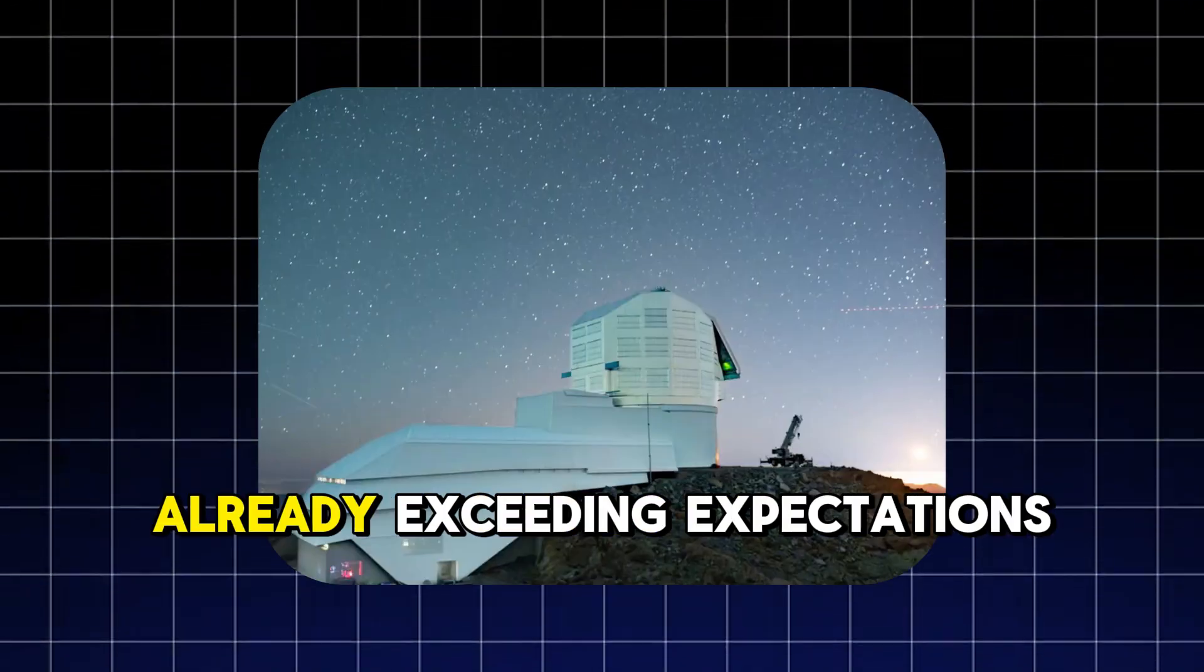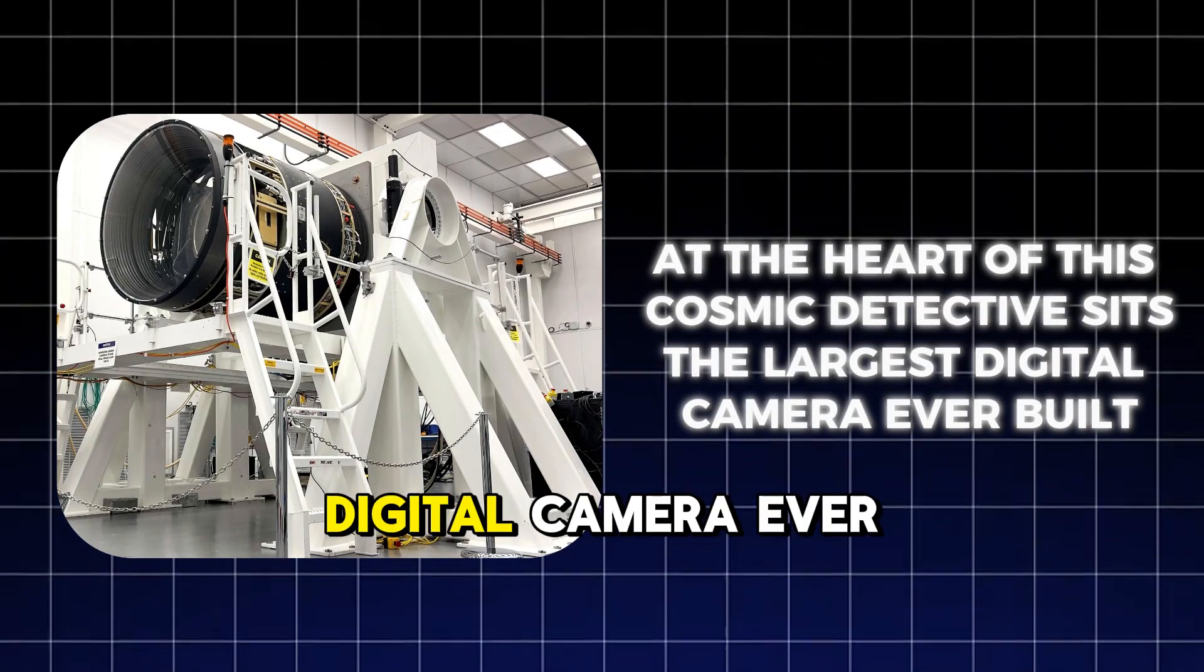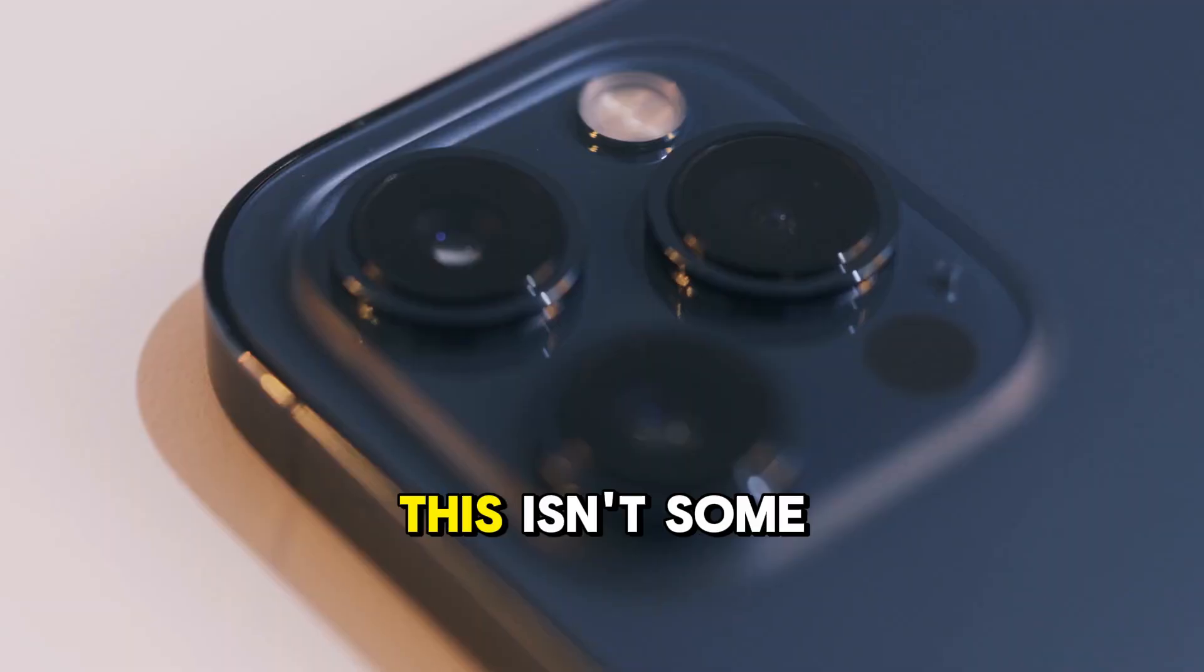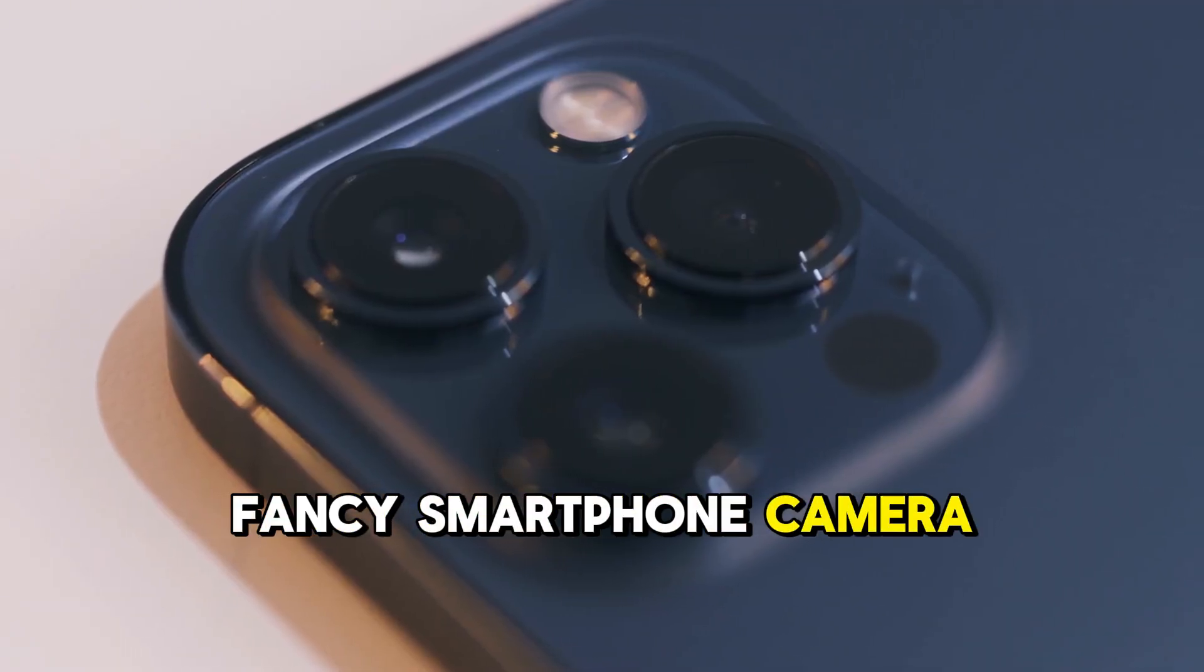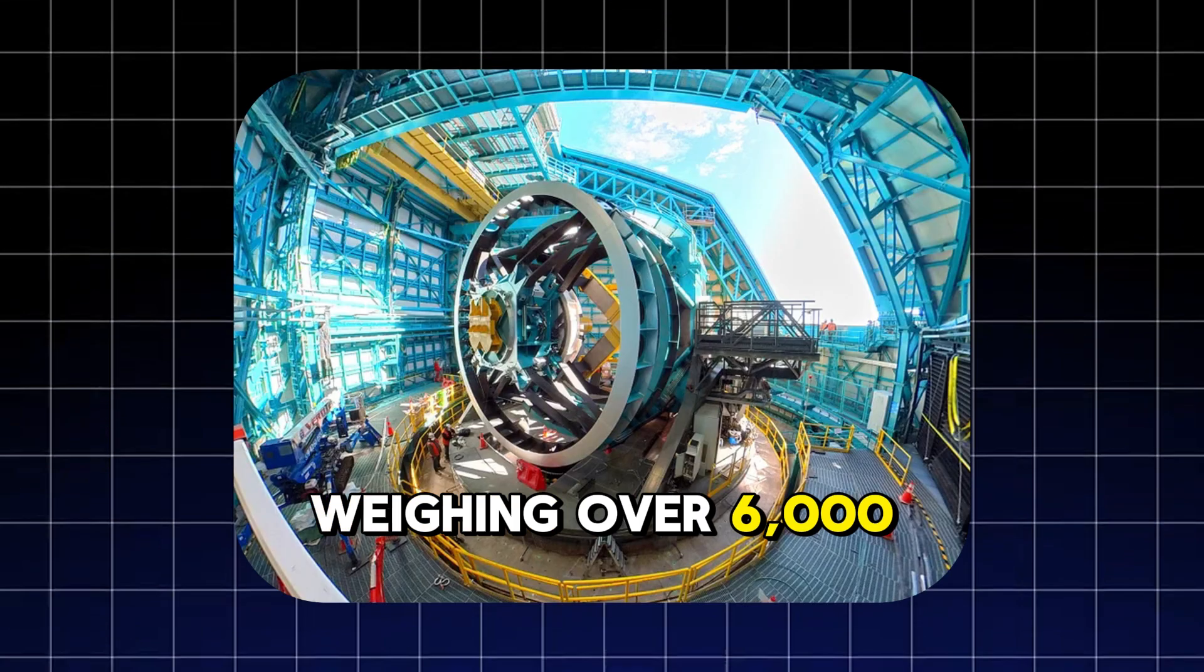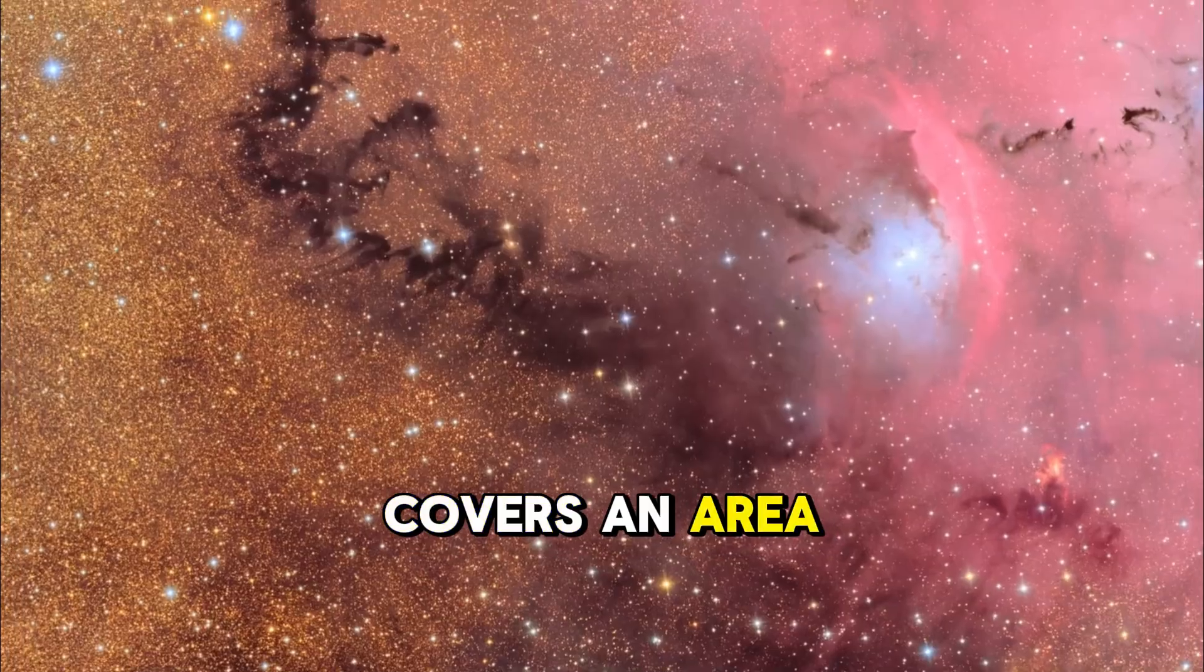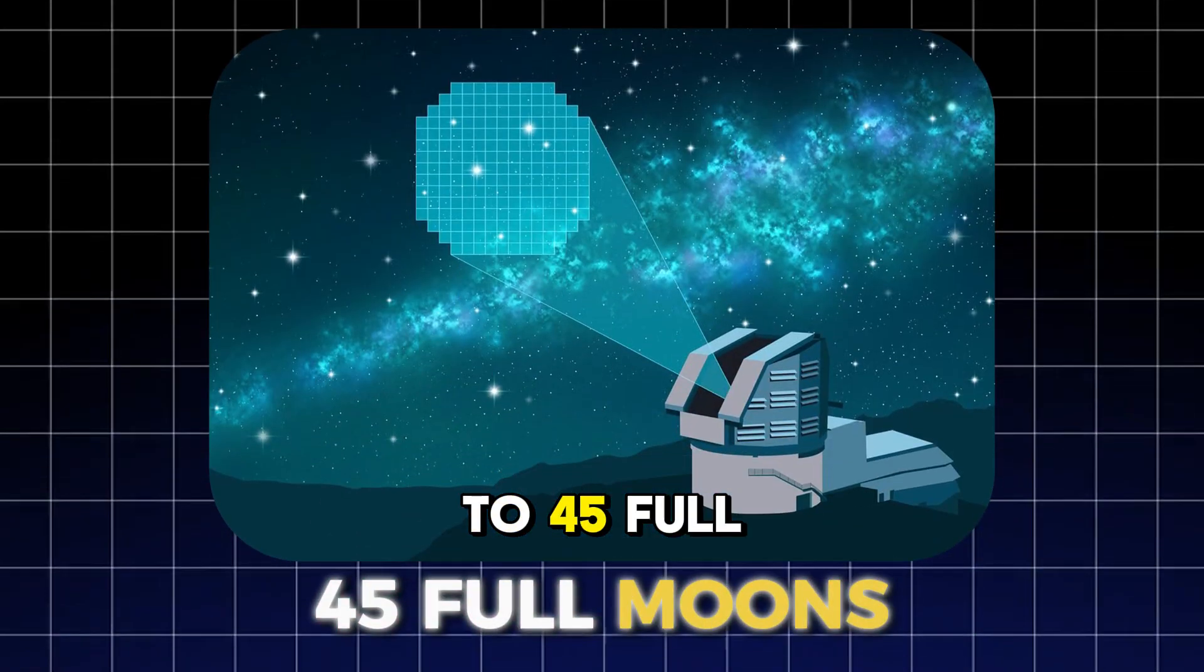And it's already exceeding expectations. At the heart of this cosmic detective sits the largest digital camera ever built. This isn't some fancy smartphone camera. It's a monster the size of a small car, weighing over 6,000 pounds. Each photo this camera takes covers an area of sky equivalent to 45 full moons.